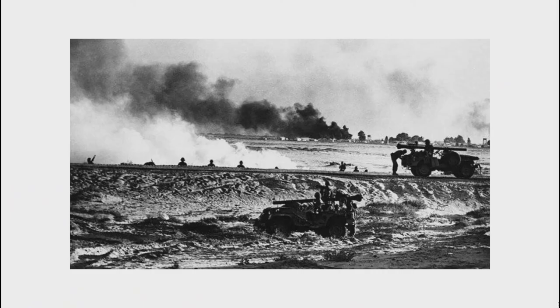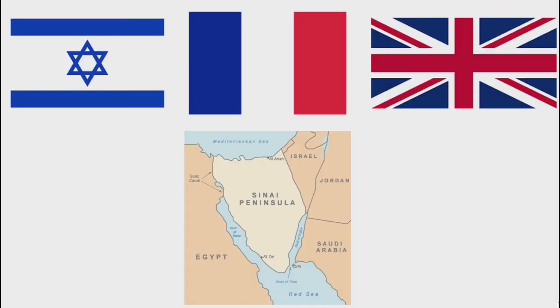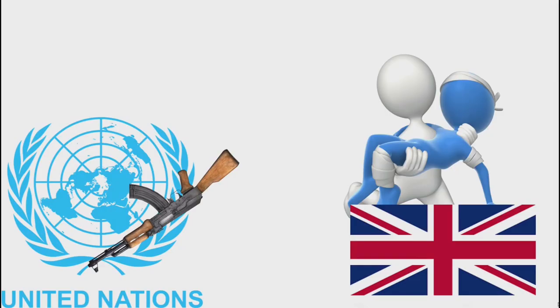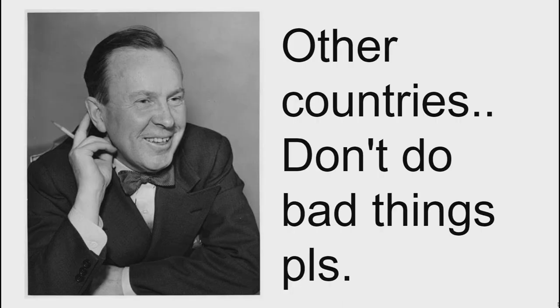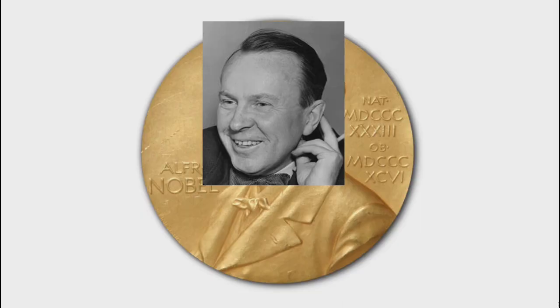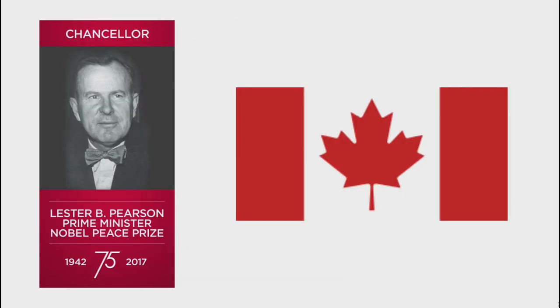The very first UN peacekeeping mission occurred during the Suez Crisis, in which Israel, along with the help of France and the UK, invaded the Sinai Peninsula to try and capture the Suez Canal. As a result of this conflict, the UN would create a peacekeeping force that aimed to intervene in conflicts and reduce the loss of life from them. A major force behind the creation of this initiative was Lester Pearson, who was at the time the Canadian Minister for External Affairs. Pearson would go on to win a Nobel Peace Prize for his actions, and also become the 15th person to ever serve as Prime Minister of Canada.